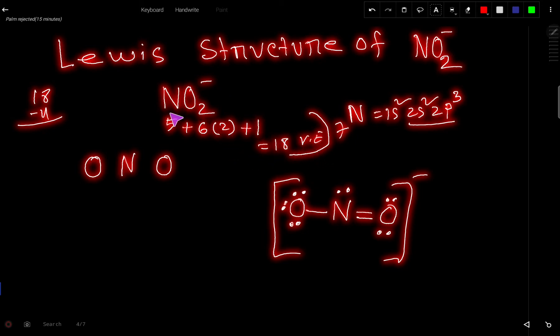Nitrogen is the element of group 5A, so it has 5 valence electrons. Oxygen is from group 6A, so it has 6 valence electrons, but here we multiply by 2 since we have 2 oxygen atoms. For the negative charge, we add an extra 1 valence electron. So totally we get 18 valence electrons.